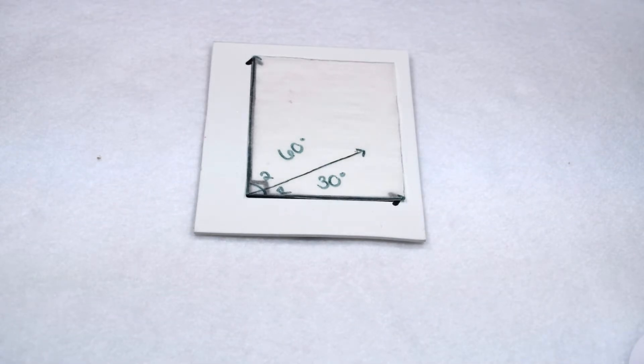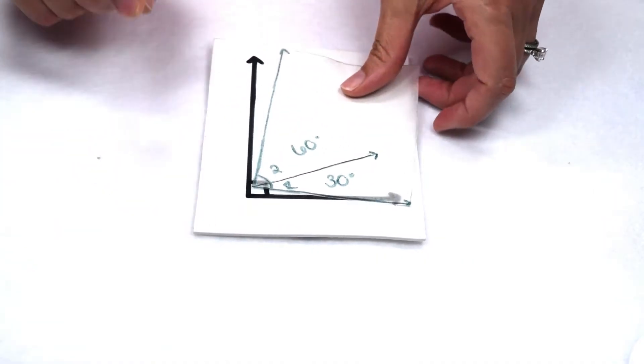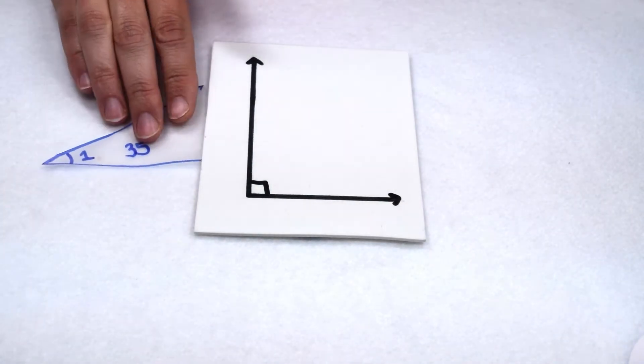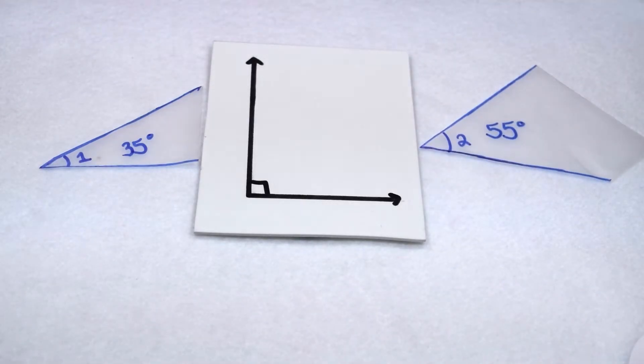Here our complementary angles are also adjacent because they have a shared vertex and a shared edge. But what if we simply had two separate angles, a 35 degree angle for example and a 55 degree angle? Would they still be complementary?